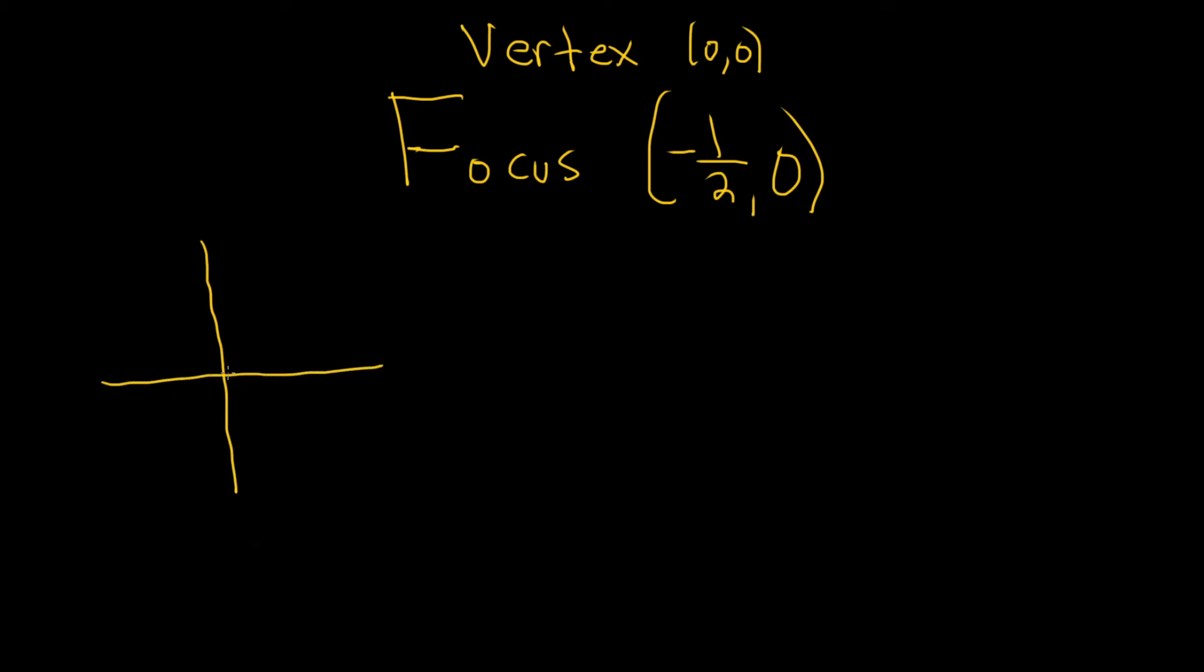So the vertex here is (0,0), and the focus is over here at (-1/2, 0). And this is important because we know that a parabola always opens towards its focus. So this means that it must open left. It must look like this.